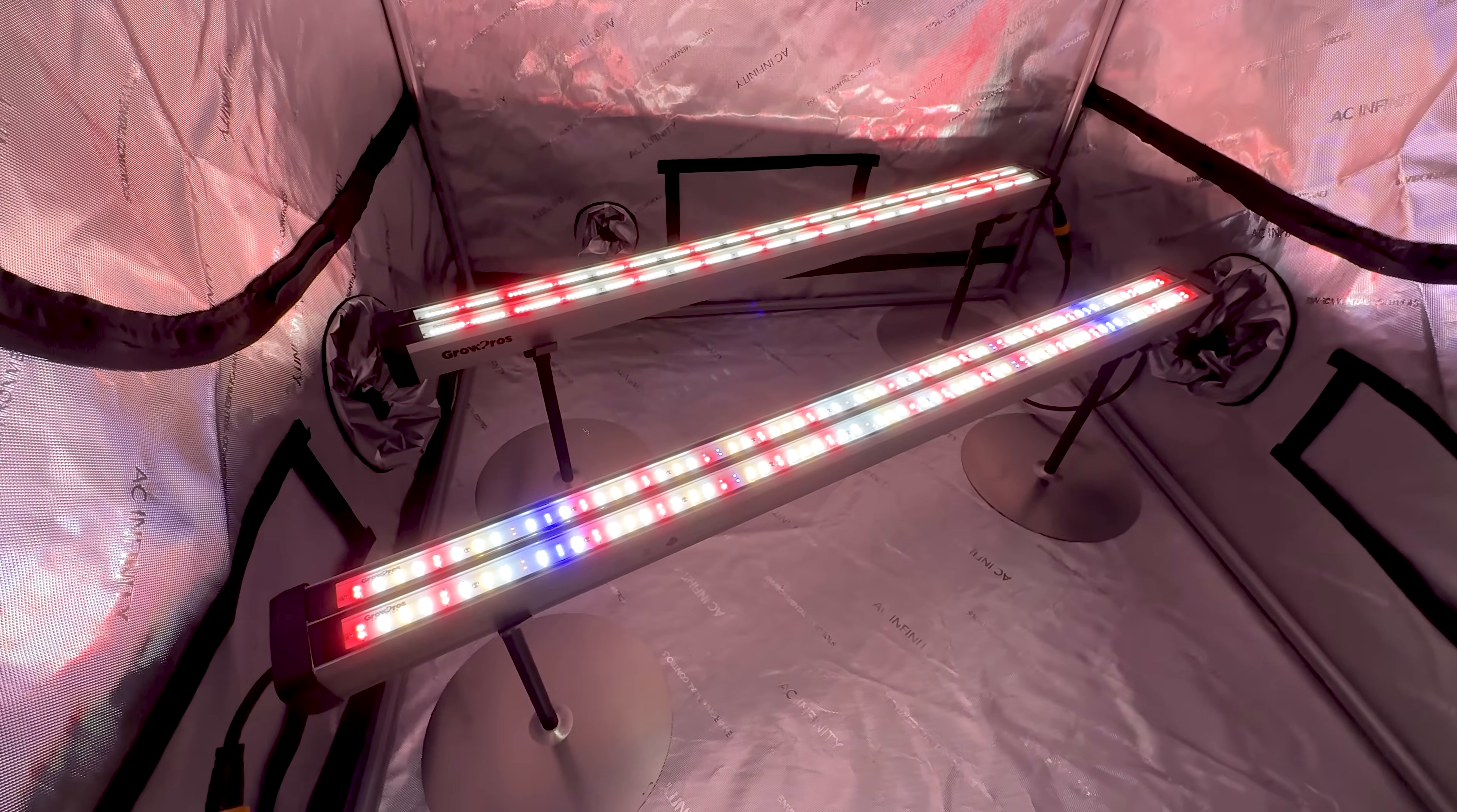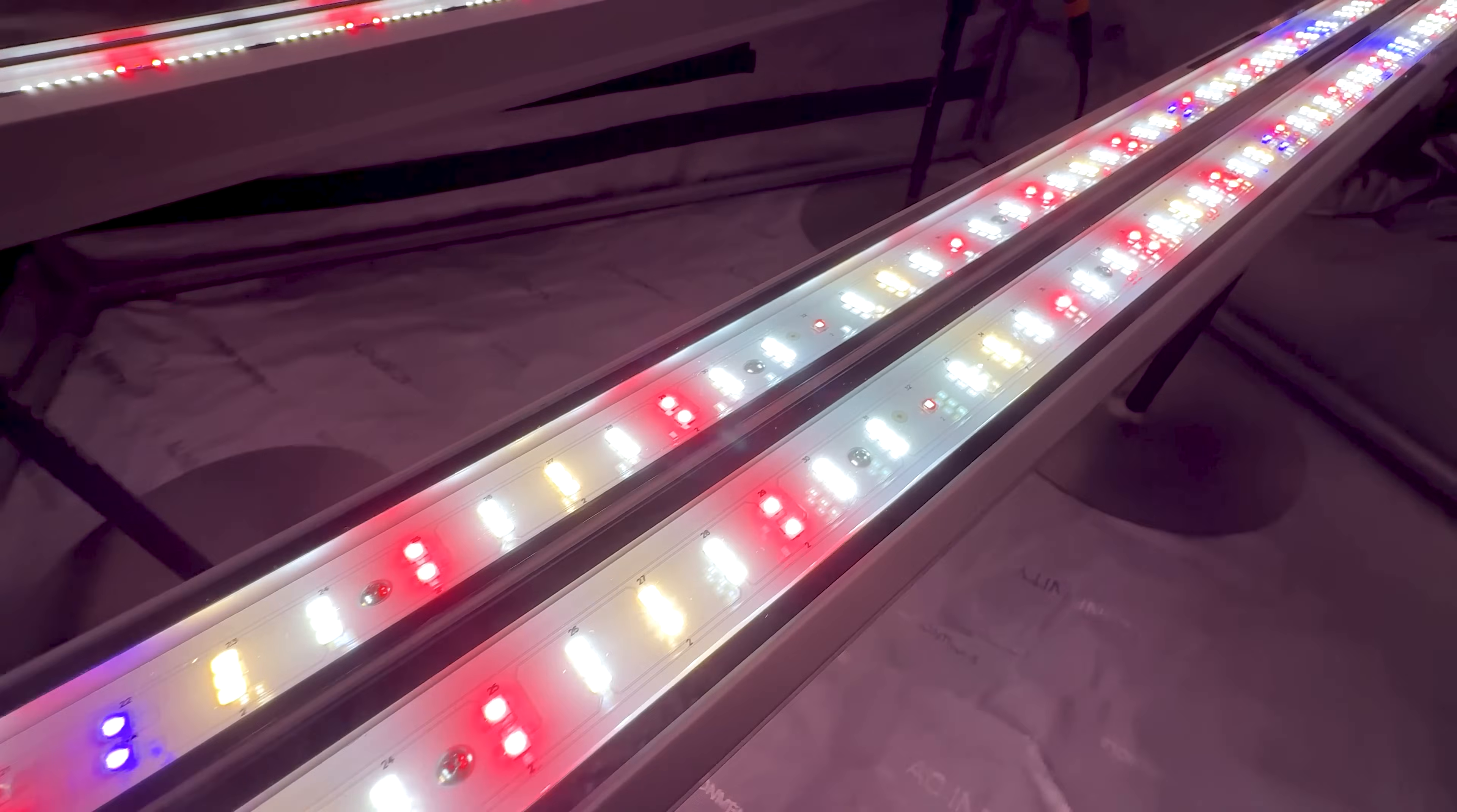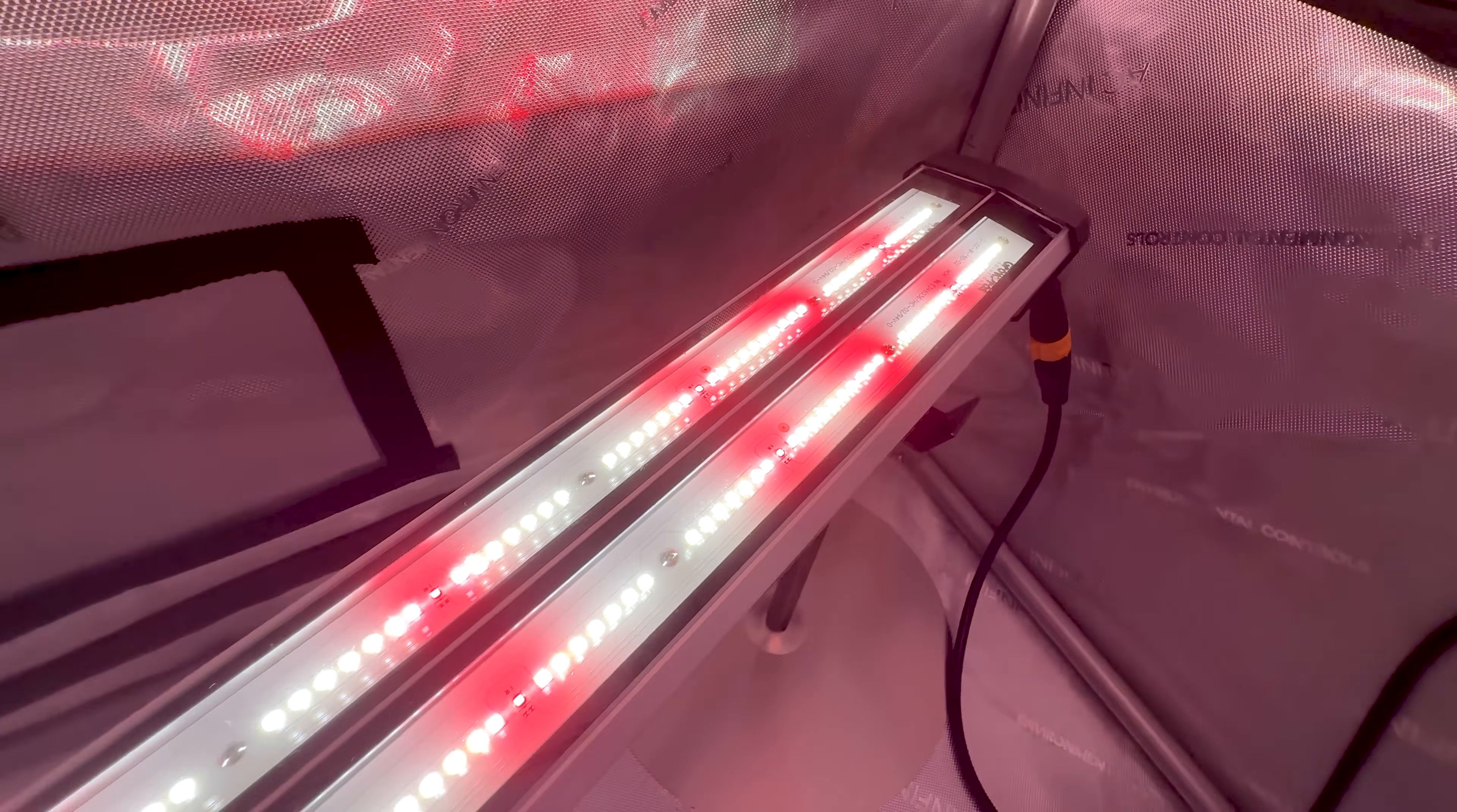When you grow multiple plants in a tent, grow room, or on benches, one of the biggest challenges is ensuring the lower canopy receives enough light. Without sufficient light, lower flowers can end up airy, less dense, and ultimately lower quality. Under canopy grow lights are specifically designed to tackle this problem and drive impressive results, including significant yield increases.